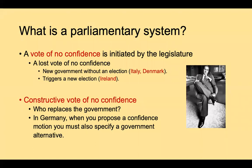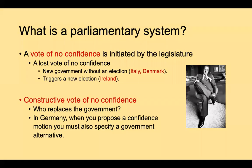There's also the constructive vote of no confidence. Here the vote must also involve the proposal of an alternative — what should the alternative government be? In Germany, when you propose a confidence motion you have to also specify an alternative. So in a parliamentary system, the legislature has much more power over the executive than in a presidential system, where the president is independently elected and whose survival does not depend on retaining a legislative majority.